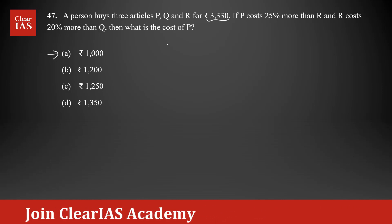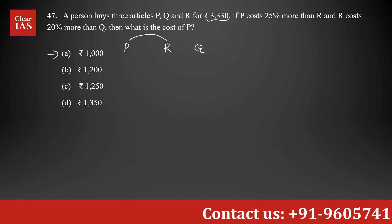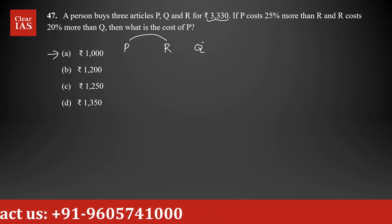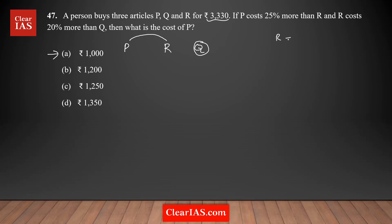There are three articles: P, R, and Q. P costs 25% more than R. R costs 20% more than Q. Taking Q as the basis, R equals 20% more, which means R equals 120% of Q.